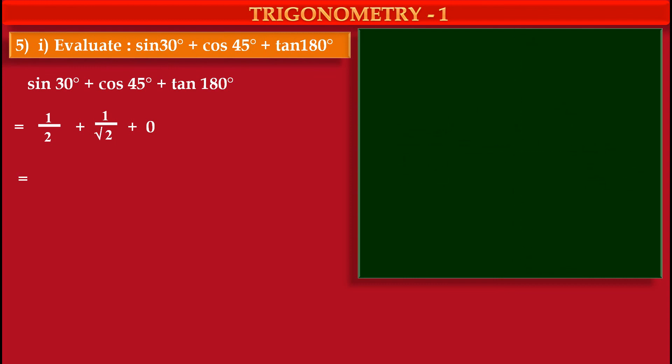Now see, third term is 0. That means now we have to add first two terms. But these two terms have different denominators, so we have to make them same.